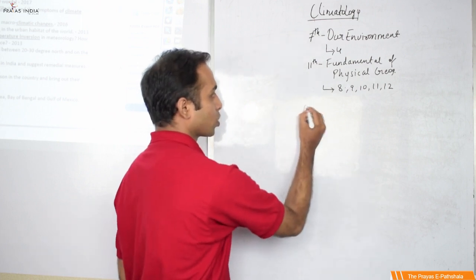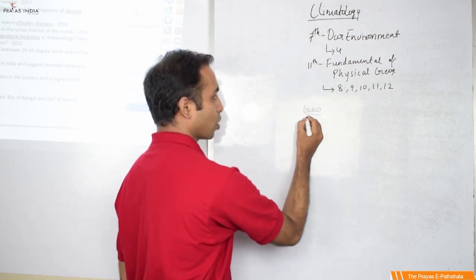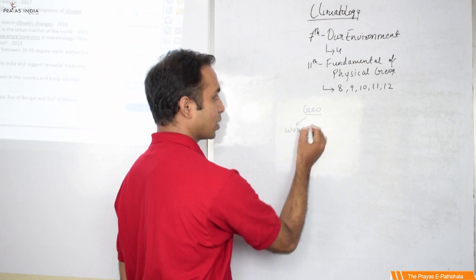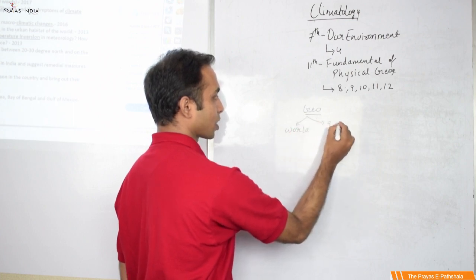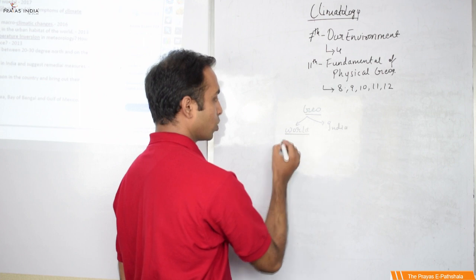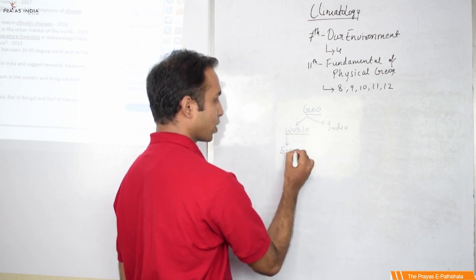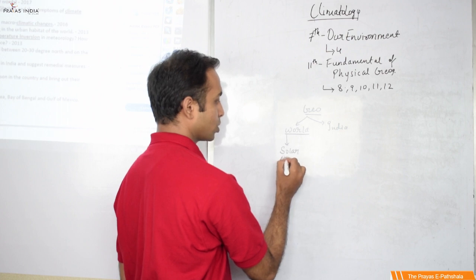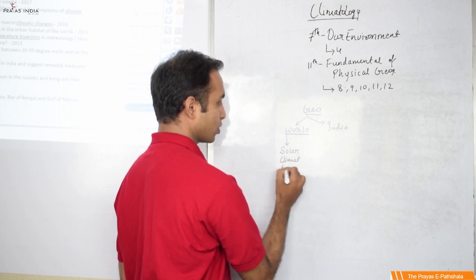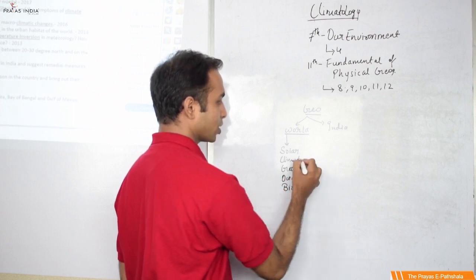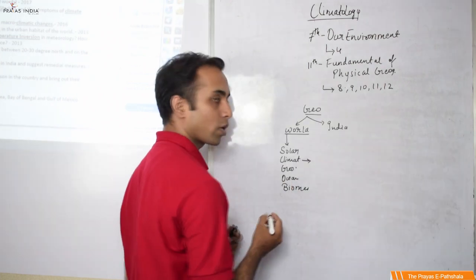As we all know, in geography we have some important topics of the world as well as India. In the context of world geography, we have the solar system, climatology, geomorphology, oceanography, and finally the biomes of the world. In this section, climatology forms a very important topic.